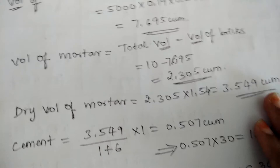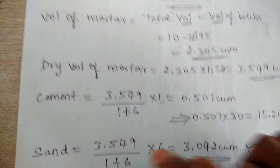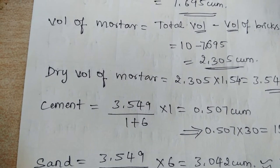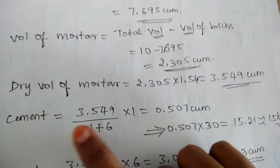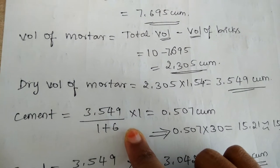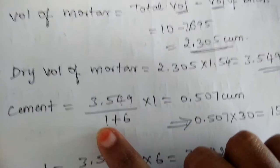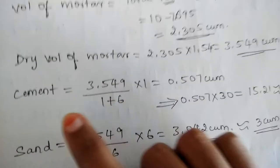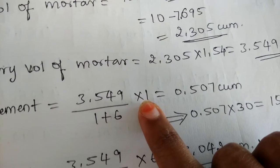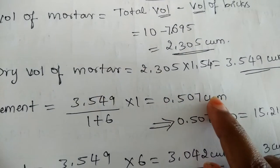Once the dry volume of mortar is known, let us find the quantities of material. The mortar consists of both cement and sand. To find the quantity of cement, we take the total dry volume which is 3.549, divided by the sum of proportion — the mortar proportion given is 1 is to 6, so 1 plus 6 — into 1, where 1 represents the part of cement and 6 the part of sand. On simplifying, you get a quantity of 0.507 cubic meter of cement.